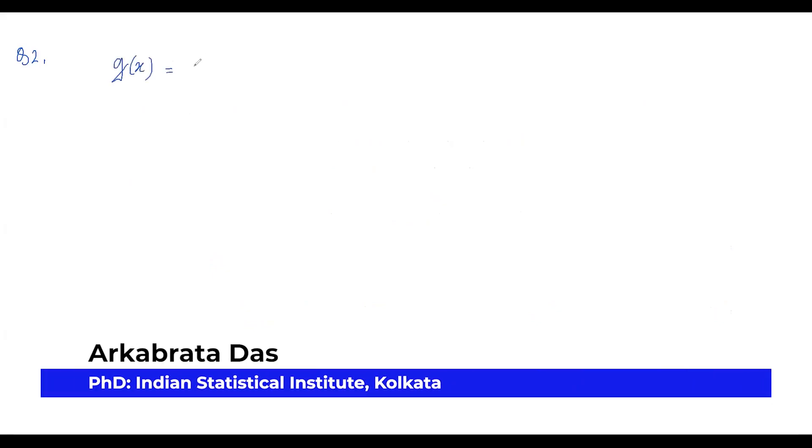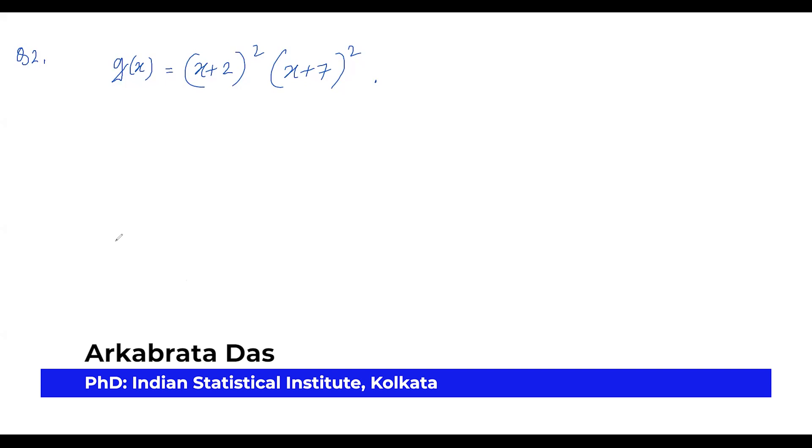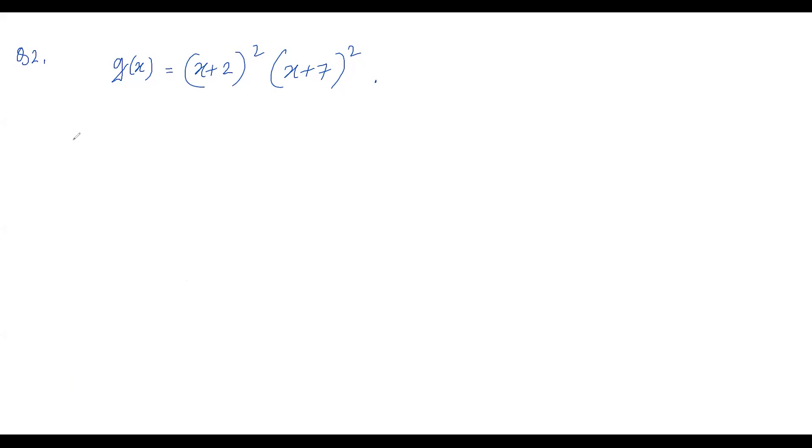So we'll be considering our polynomial g(x) to be equal to (x+2)²(x+7)². Now you must know when can a polynomial have exactly one double root.